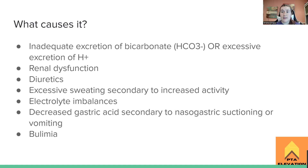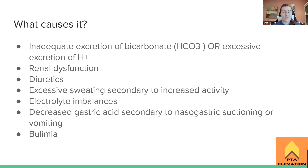Excessive sweating secondary to increased activity or other things can also cause it — that's why they make you drink Gatorade or a drink with electrolytes after you work out and sweat a lot. We need to replace those electrolytes so we don't have systemic problems such as metabolic alkalosis. A lot of these problems come from losing electrolytes, and electrolyte imbalances can also cause cramping. We need to keep everything at the right level.